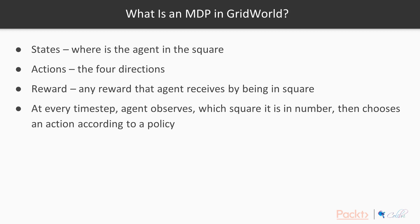Let's use GridWorld as an example. The state is where the agent is in the grid, represented by an integer indicating which square it occupies. The actions are the four directions you can move. The reward is any reward the agent receives by being in a square. At every time step, the agent looks at which square it is in, takes that as a number, and uses it to determine which action to take.